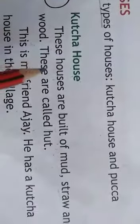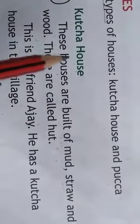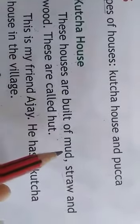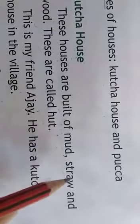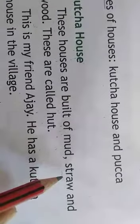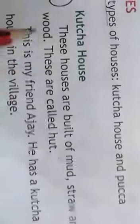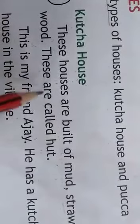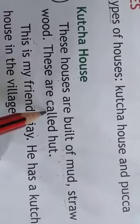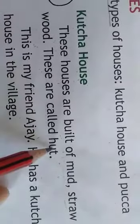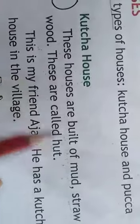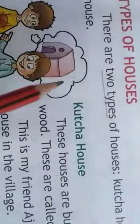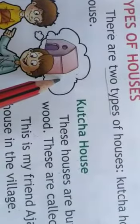इस तरह के जो घर होते हैं, Kaccha houses होते हैं, किस चीज़ के बने होते हैं — mud के, straw means फूस के, और लकड़ी के. These are called hut. इनको hut बोलते हैं. Look at this picture — this is the picture of a hut.